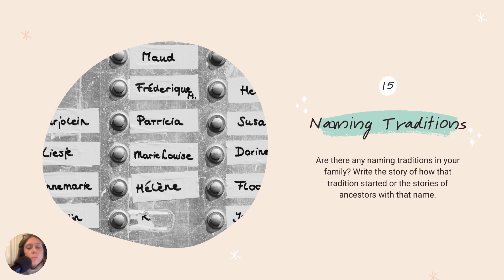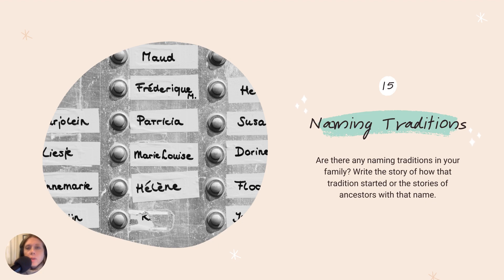Naming traditions — we talked briefly about surname naming traditions, but this also covers first names, middle names, and maiden names: how all of those are passed down from generation to generation. Where did a naming tradition come from? Why did it start? And if you're a third, who was the original person? You can just kind of go from there.